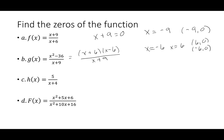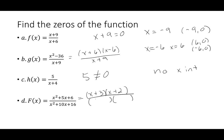For h(x) = 5/(x+4): the numerator is 5, which is never zero, so there are no x-intercepts. For f(x) = (x²+5x+6)/(x²+10x+16): factor to get (x+3)(x+2) over (x+8)(x+2). First reduce — cancel the (x+2) — leaving (x+3)/(x+8). Then x+3=0 gives x=-3, so the x-intercept is (-3, 0).